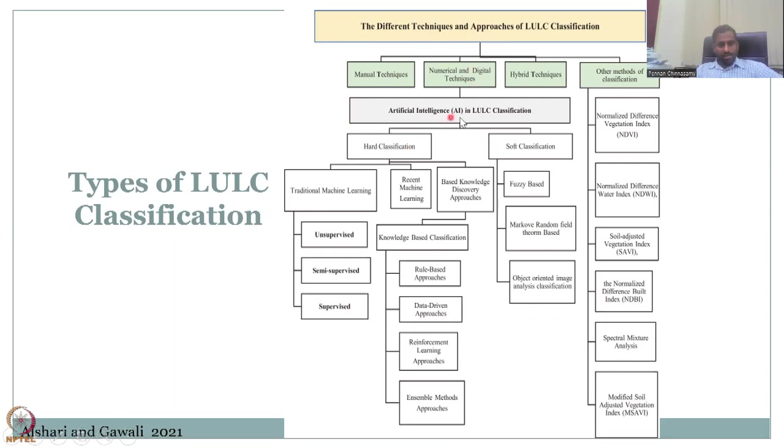So in the advanced techniques, you have artificial intelligence in LULC. So those people who like to have big data, AI, ML in their profile, GIS can give you that because all the data that comes into from remote sensing is really at a high volume and frequency. So you get really good data at a bigger frequency. So then you have hard classification and soft classification. Soft is, it is empirical. It runs through models. Whereas hard classification is traditional machine learning, unsupervised, semi-supervised, and supervised, which we discussed in the previous slide. And then the recent machine learning trends and the basic KDD or knowledge discovery approaches.